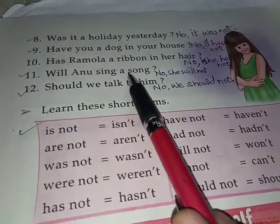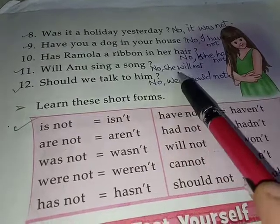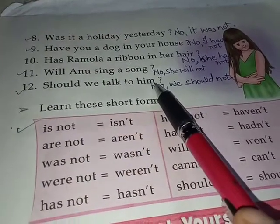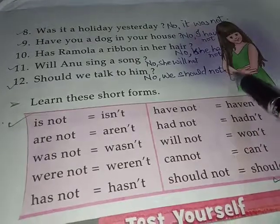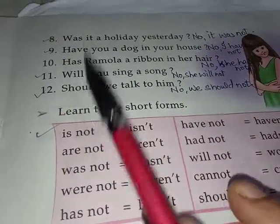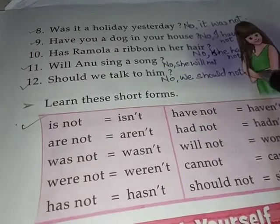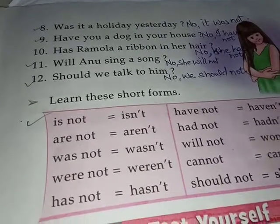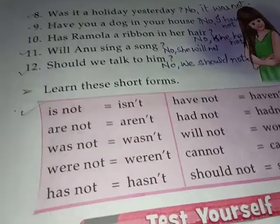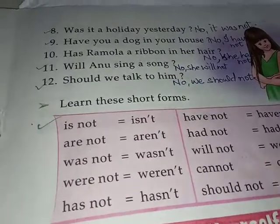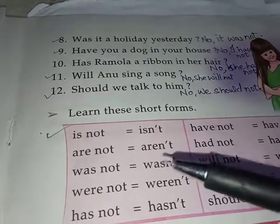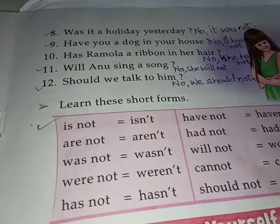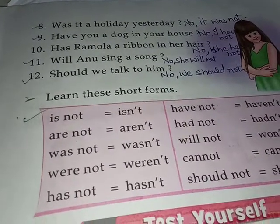Will Anu sing a song? No, she will not. Should we talk to him? No, we should not. So we have seen that the verb used in the question — the same verb is used in the answer. Sirf us question mein hum verb ko change karte hain jahan 'you' ke saath 'are' laga ho, aur answer mein 'I' ke saath 'am' use karte hain. Otherwise, with all other questions, the same verb that is used in the question will be used in the answer. Okay children, tomorrow we will continue with this lesson. This is all for today, thank you.